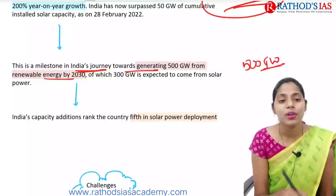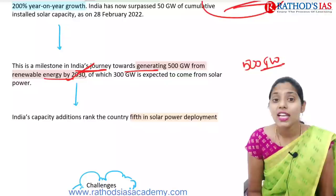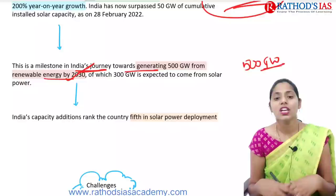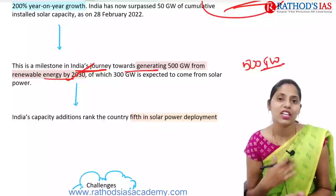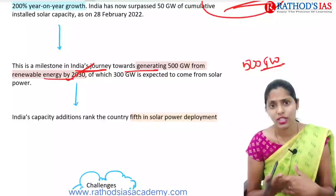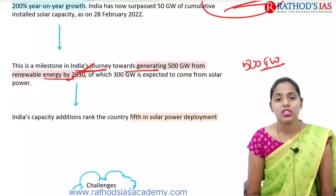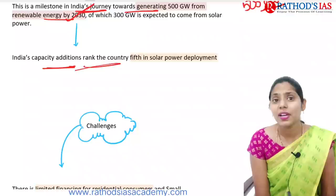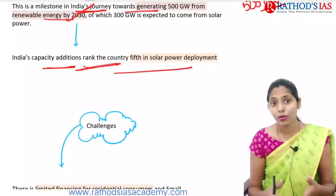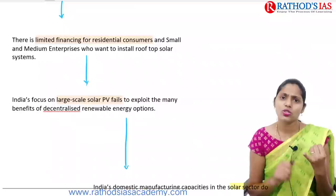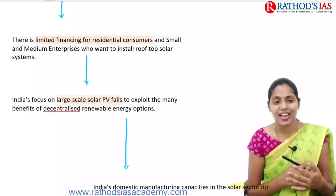This is a milestone in India's journey towards generating 500 gigawatts from renewable energy by 2030, of which about 300 gigawatts is expected to come from solar power. India's capacity addition ranks the country fifth in solar power deployment globally. Challenges include no proper financing for residential consumers who want solar rooftops, and most people focusing on large-scale solar photovoltaic cells rather than solar rooftop systems.